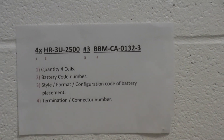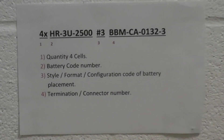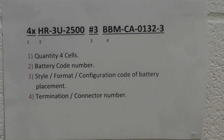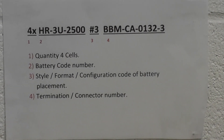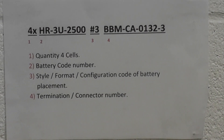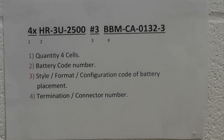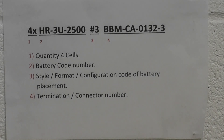So going through once more: the first part is the quantity of the cells; the second part is the battery code number, or the code number for the individual cells; the third part is the format or layout of your battery pack; and the fourth and final part is the termination and wires.